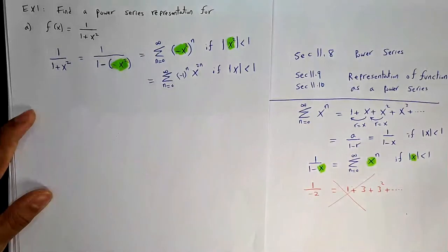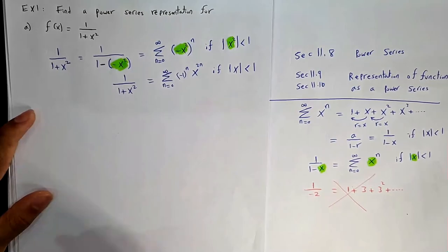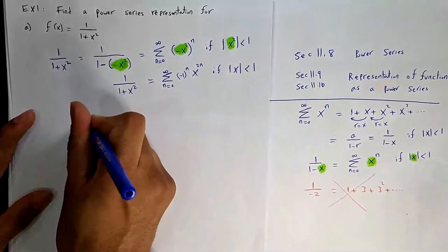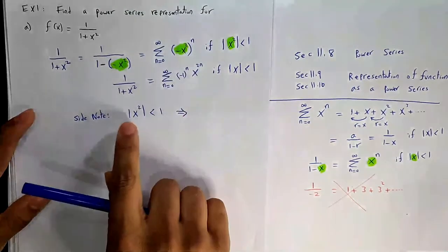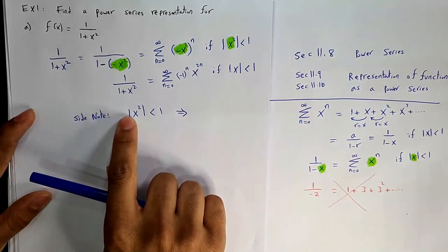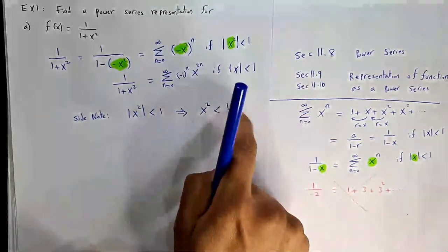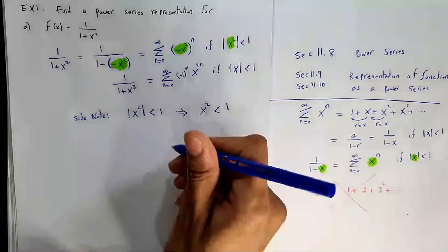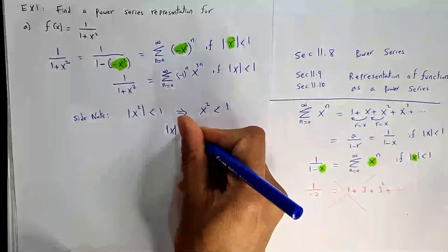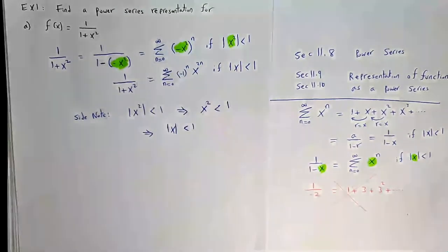Simplifying the condition: |x²| < 1 is equivalent to x² < 1 (since x² is always non-negative), and taking square roots gives |x| < 1. So f(x) = 1/(1+x²) = Σ(n=0 to ∞) (-1)ⁿ x²ⁿ, valid for |x| < 1.